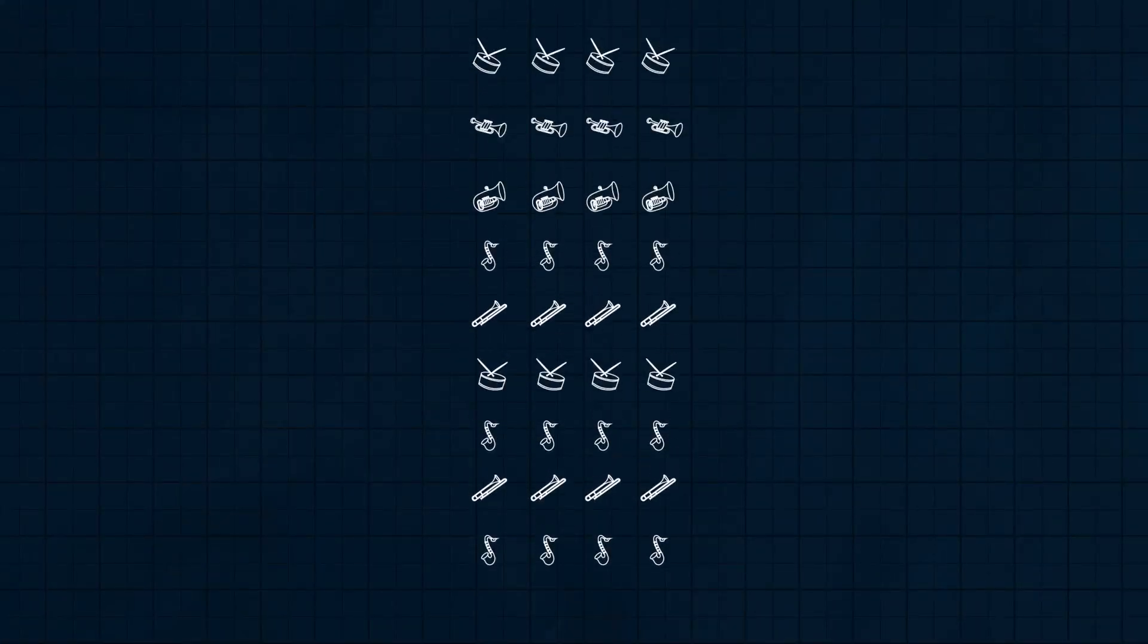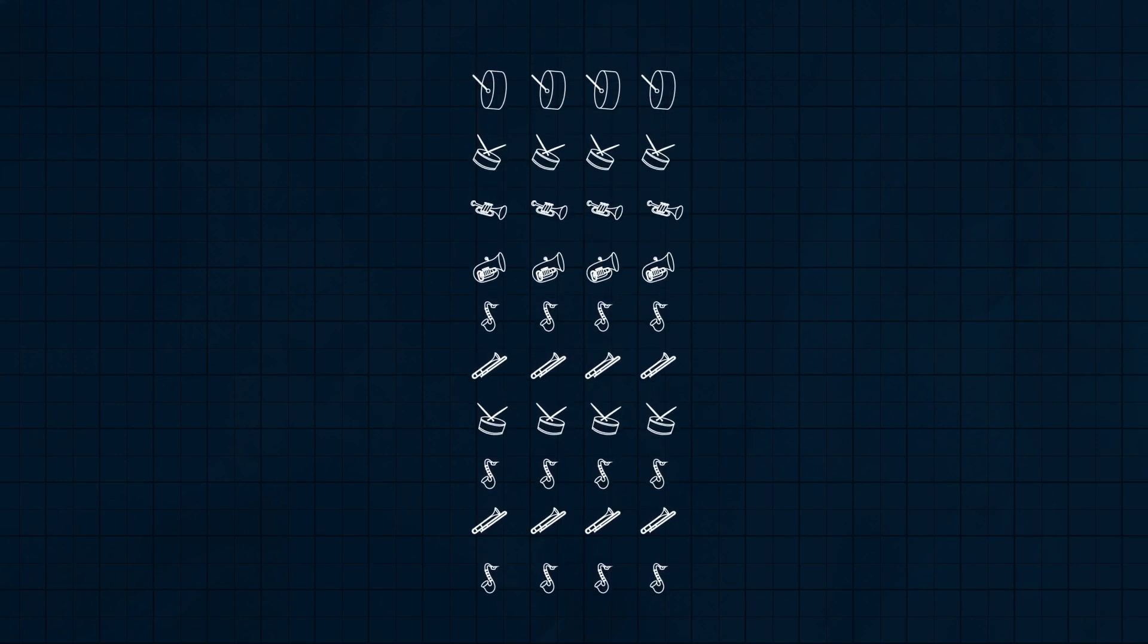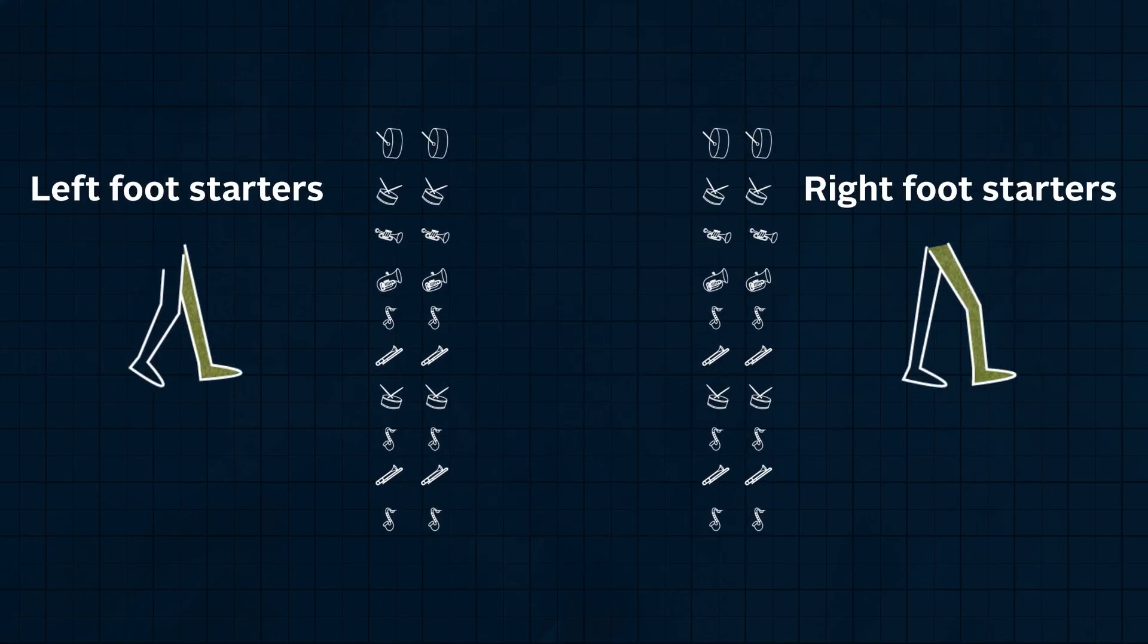So the expected number of instep rows is smaller than in the first problem, when all the marches were independent. Intuitively, this makes sense.